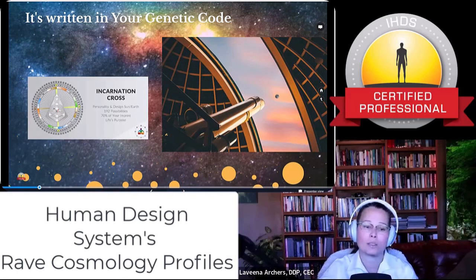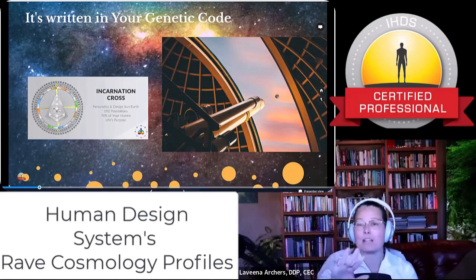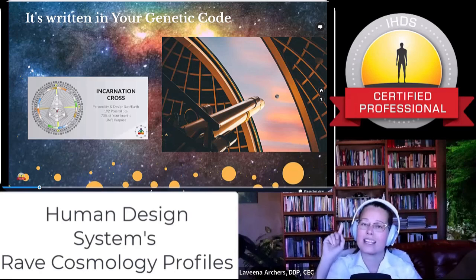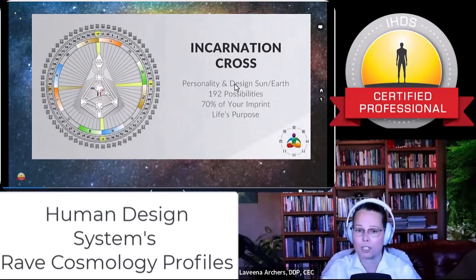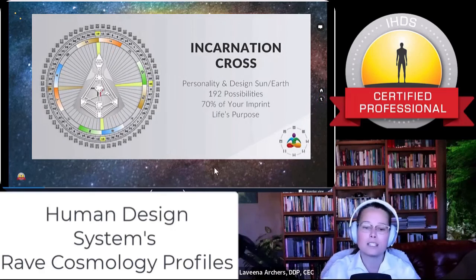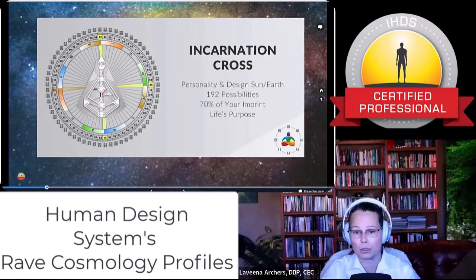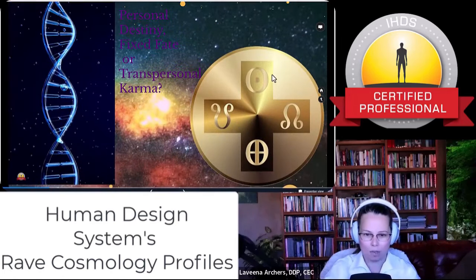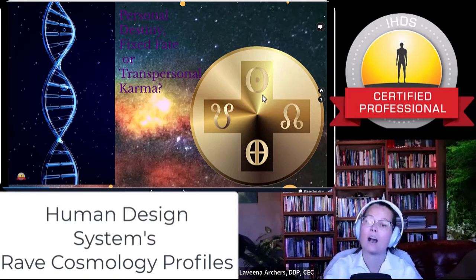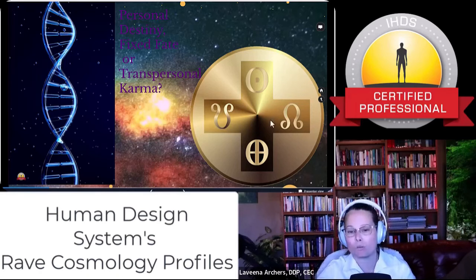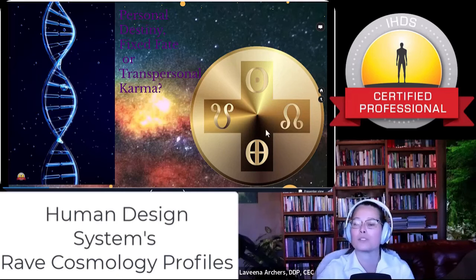This is written in your genetic code. I selected this aspect of the knowledge to go into next in Rave Cosmology because it's one of the most practical things that's going to get you in touch with your incarnation cross. Personality and design suns and earths — there are 192 possibilities. It's 70% of your imprint, part of your life's purpose or life's work. We're going to talk about the core essence of your personality — your psychology — as well as your physiological state of being in the world.